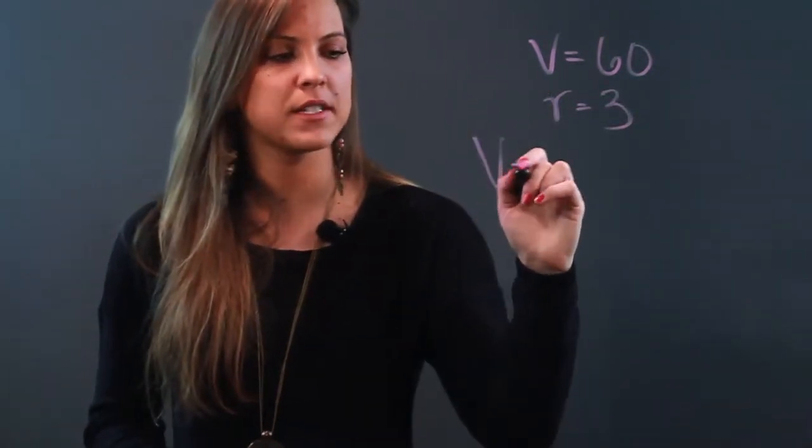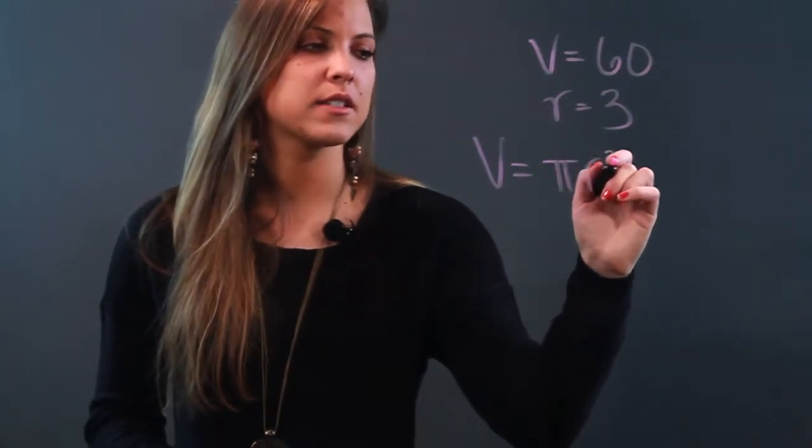What we need to know is the volume formula. The volume of a cylinder is pi r squared times the height.